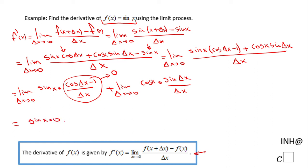...times zero plus, and the next one, this limit goes to one. So I'm going to have cosine of x times one. So my final thing here will be to simplify this, which is nothing else than cosine of x. So the derivative of f of x equals sine of x is cosine of x.